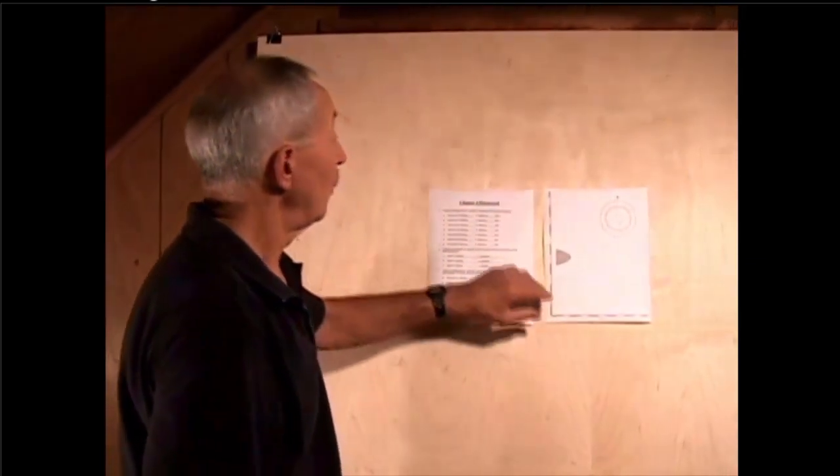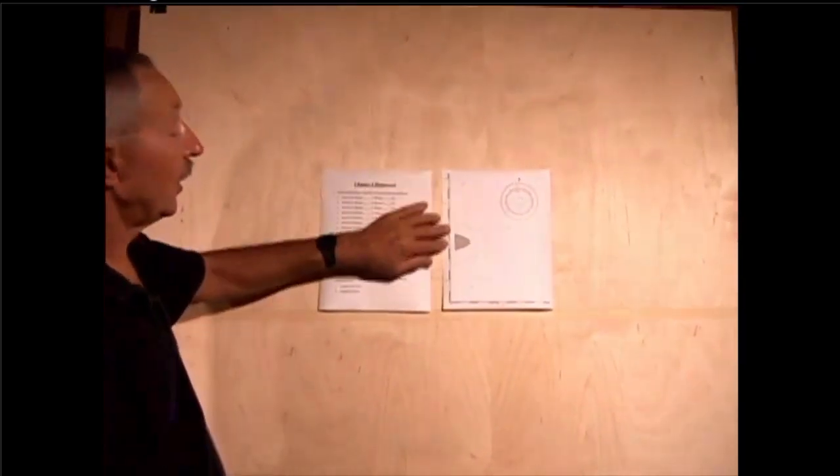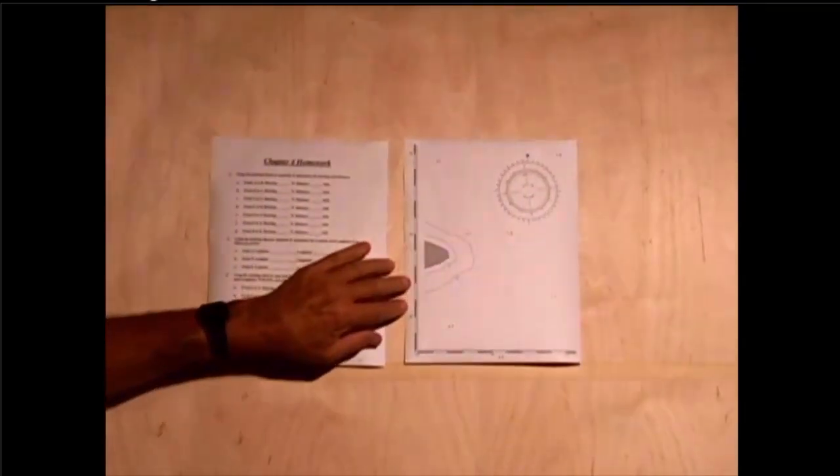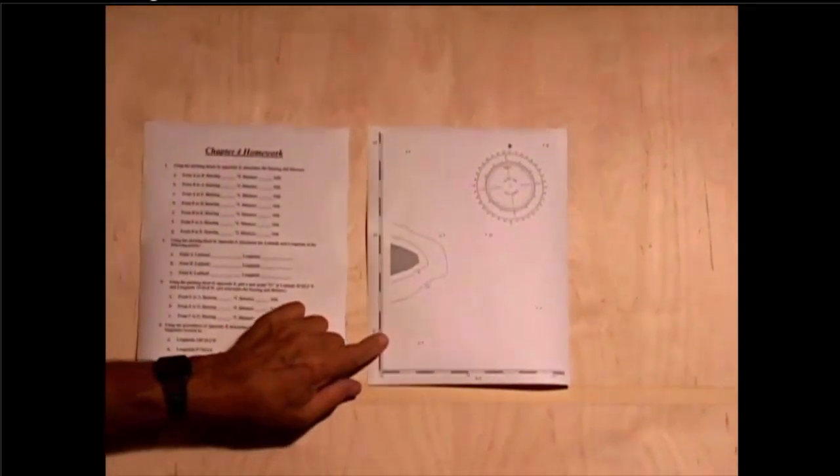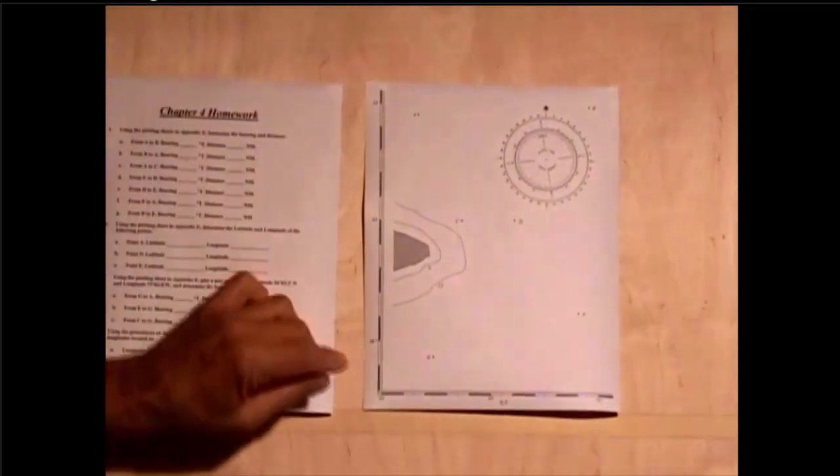When we look at this chart, we see that the vertical scale here is the latitudes, and this shows 26 degrees, 5 minutes, 10 minutes, and so forth.